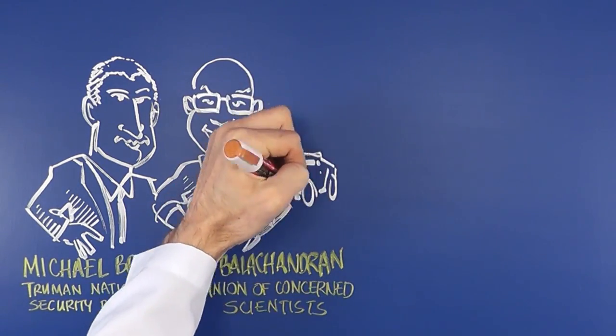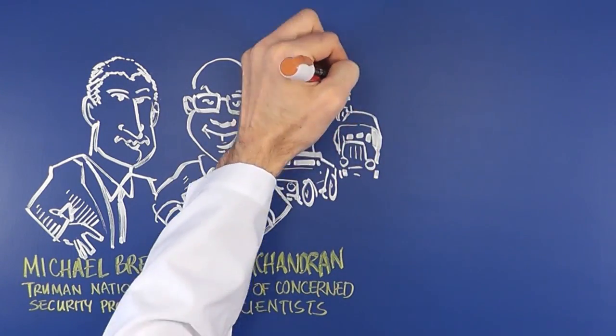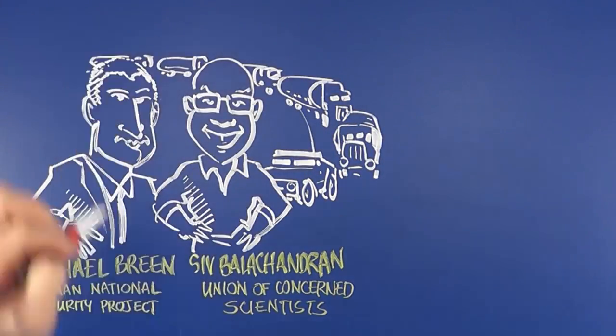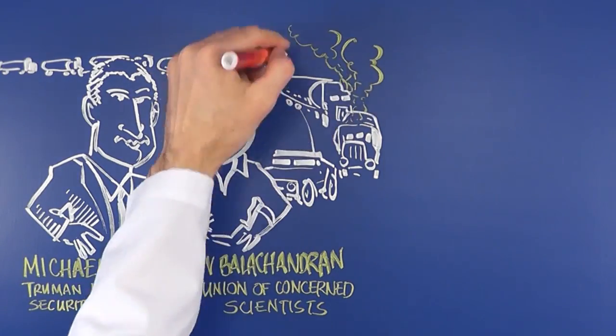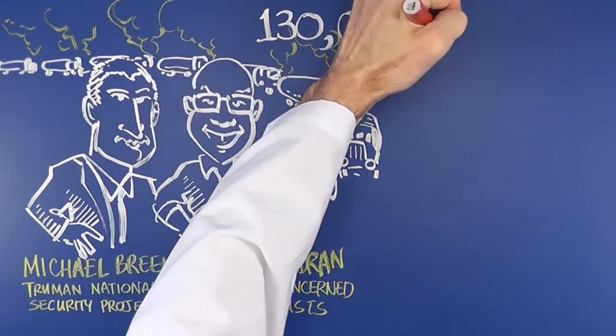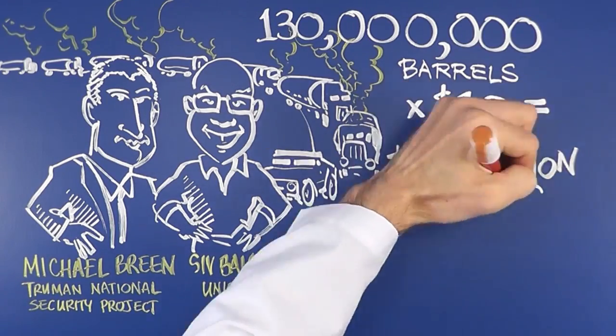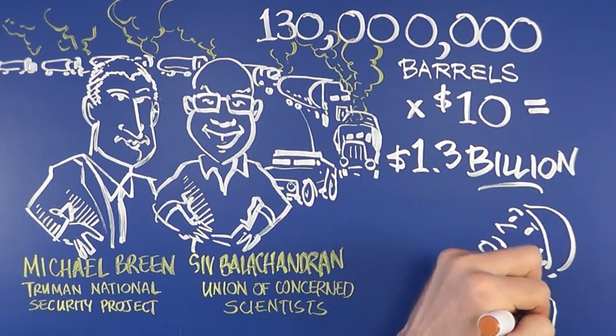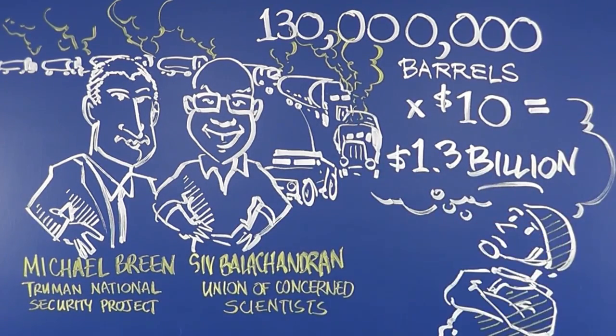Did you know the U.S. military is the largest oil user in the world? Unfortunately, moving fuel on the battlefield is dangerous, and the oil is expensive. A $10 increase in the price of a barrel of oil costs the military more than a billion dollars. Money we can't use to protect, train, and equip our troops.